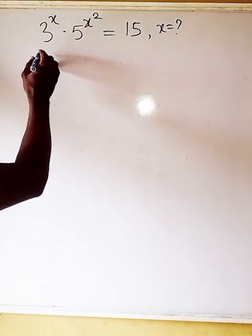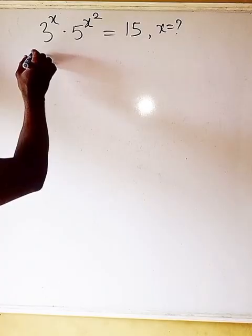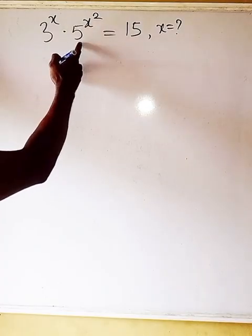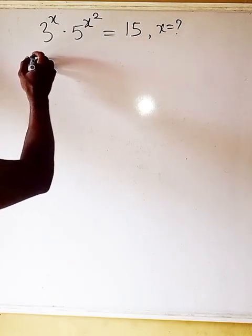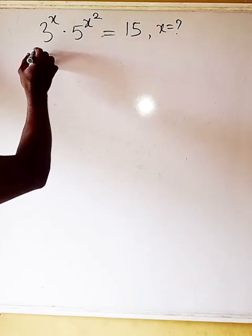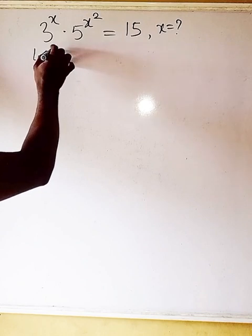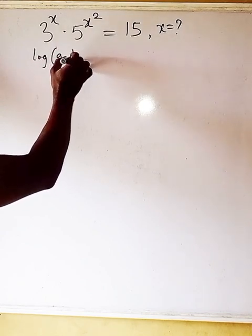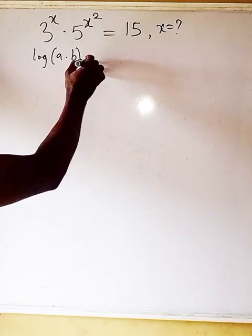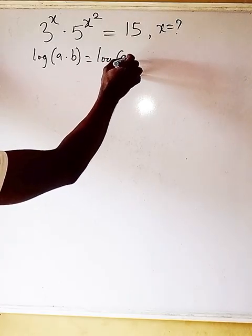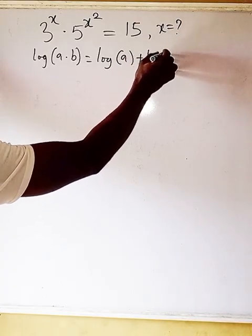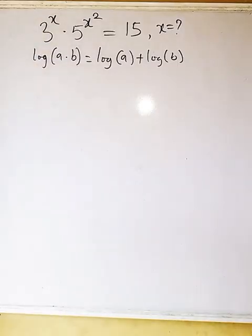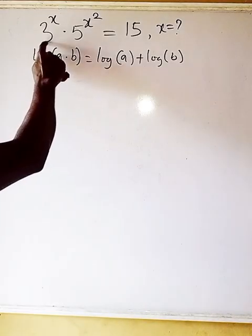First of all, recall that we have 3 to the power x times 5 to the power x² equals 15. We need to recall from the law of logarithm that log(a × b) equals log a plus log b.